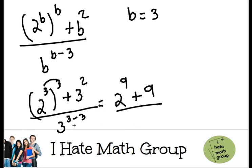And then look what's going to happen on the bottom. 3 minus 3 is going to be 0. But let's remember, anything that is raised to the 0 is just 1.